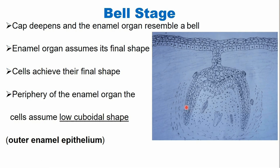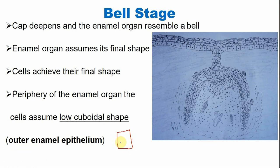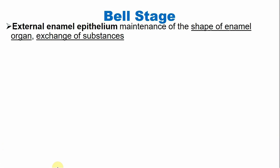There are some cells in the periphery of the enamel organ. These cells are known as the outer enamel epithelium, and they are low cuboidal in shape. The outer enamel epithelium helps in the maintenance of the shape of the enamel organ and helps in the exchange of substances.